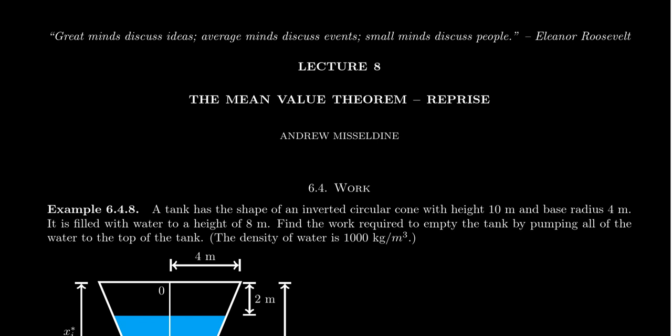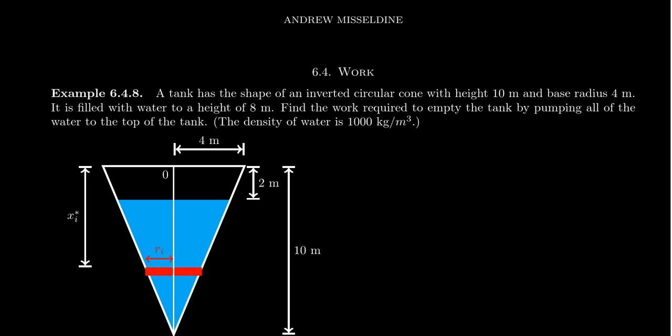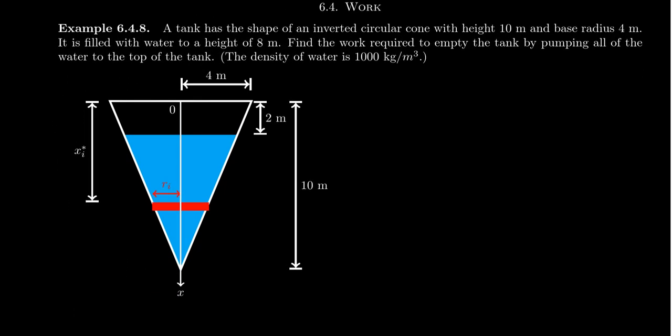In this example, what we want to do is consider the work it takes to pump water out of a tank. We're going to pick some tanks of some interesting shapes, because the shape of the tank will determine how difficult it is to pump out. These water pumping work problems are going to feel a little like the volume problems we did earlier in this chapter. Consider, for example, a tank that is shaped like an inverted circular cone — that's just a fancy way of saying an ice cream cone.